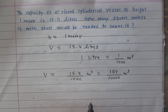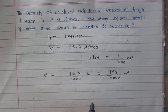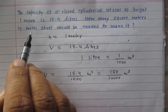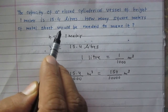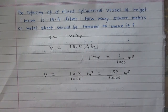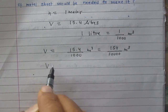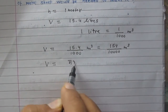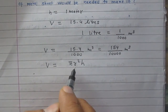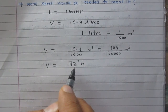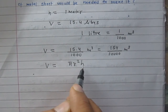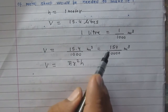We will first find the radius of the base of the cylinder, then find the total surface area to determine the area of metal sheet required. According to the formula, volume of a cylinder is π r² h, where r is the radius of the base — which is unknown — h is 1 meter, and volume is 154/10,000 meter cube.